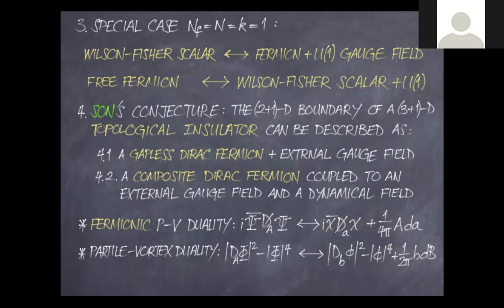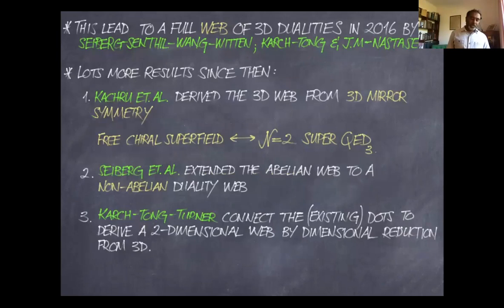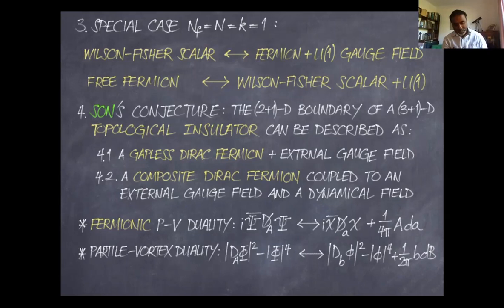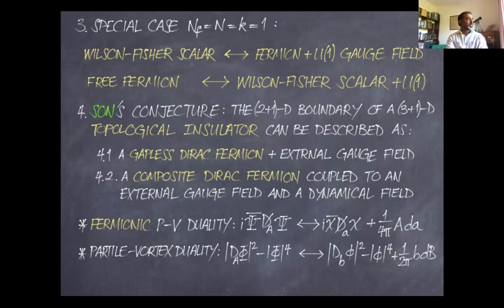Regarding 'gapless': in this case it is effectively massless, but in general it means there is no gap in the spectrum. The observation that Son's conjecture is equivalent to fermionic particle-vortex duality was made by Vishwanath and Metlitsky around 2014–2015, and it's what spurred myself and Nastasi to start thinking about this problem and to begin unraveling the bigger picture.